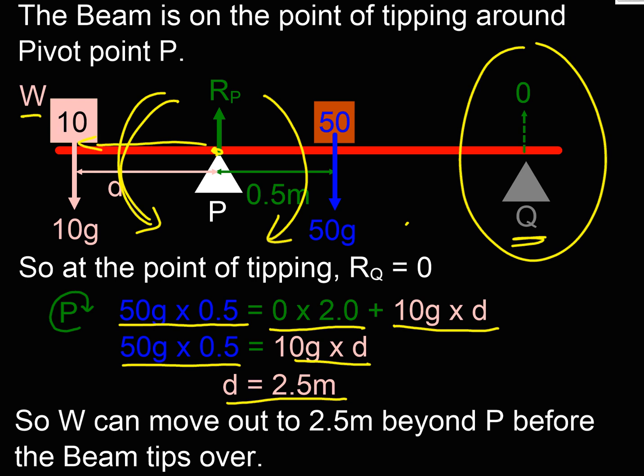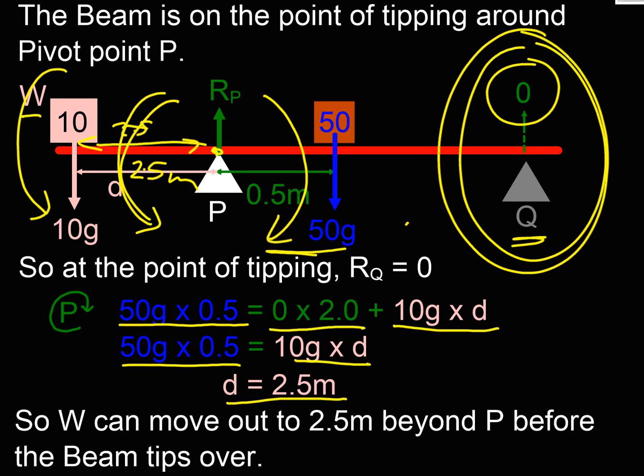Now, if we go any further than the 2.5 metres, this moment exceeds that moment, and the thing will tip over. The beam will tip over at that point, because we can't hold it at this end. It's just going to tip over. So what we've done is found our critical value, the final place where it's still in balance. And in effect, we do that because that value is going to be zero, the reaction force at the right-hand end.